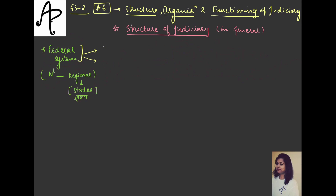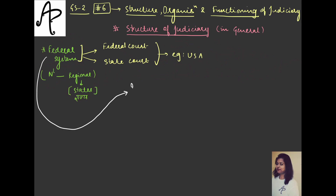One will be the federal court at the union level, and another will be the state court. For example, the US is a federal country and there is a federal court and a state court — this is known as the double system of courts. Now for us, in the case of India, despite the fact that we have a federal system, India has not adopted a double system of judiciary or courts. So we have a single integrated system regarding judiciary.